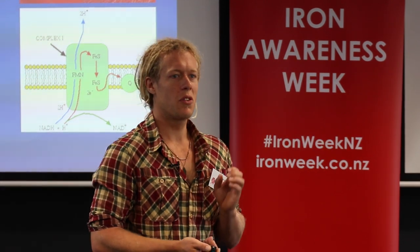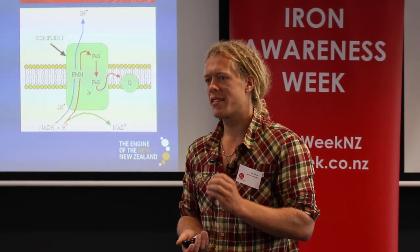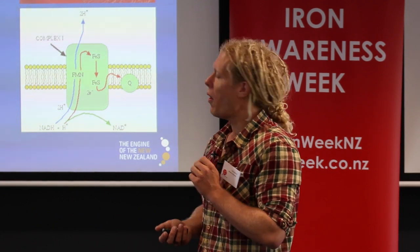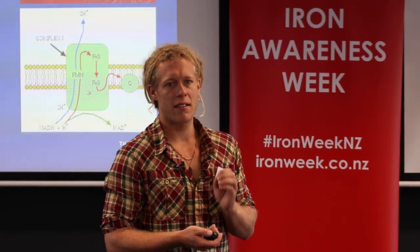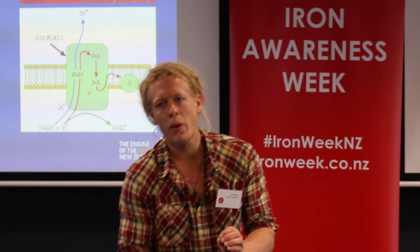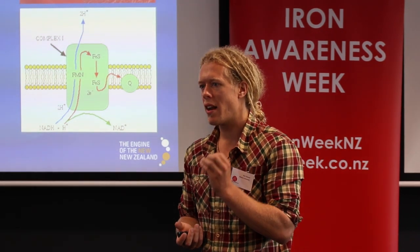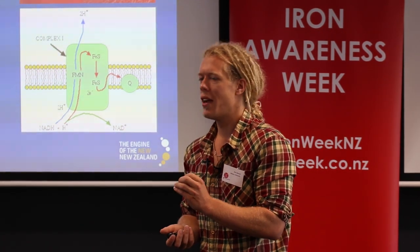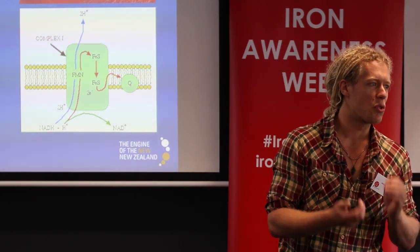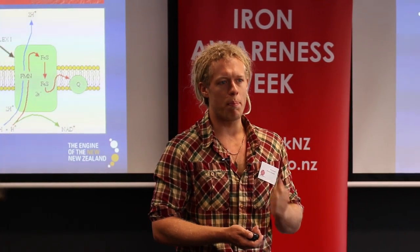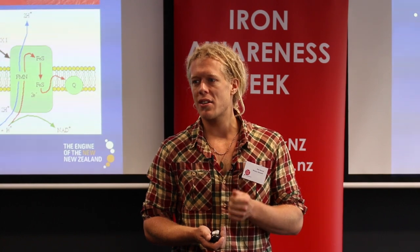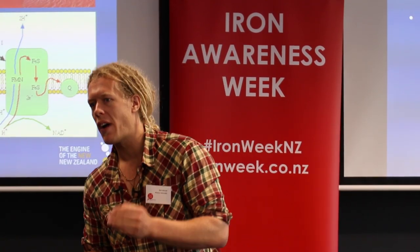If you can't get oxygen to the cells, you can't produce as much energy and that cell cannot function as well. What you might not know is that iron can be reduced and oxidised, and because of this activity, iron is actually very important not only in bringing oxygen to the cells to make ATP, but also involved in the proteins in the inner mitochondrial membrane of cells that generate a proton gradient that drives ATP synthesis. The moral of the story is that iron is really, really important for making energy, and in cells that use a lot of it, if you lack iron and you can't produce as much energy, that cell function is compromised.